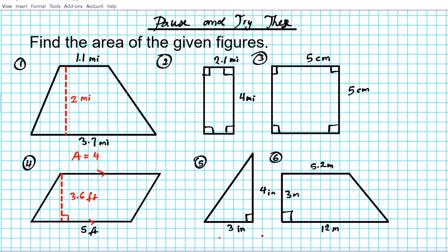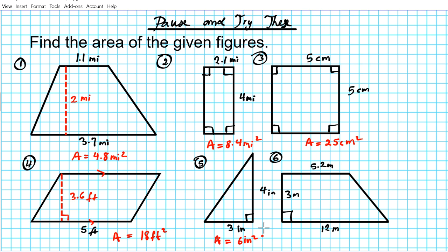Number one: the area is 4.8 miles squared. Number two: the answer is 8.4 miles squared. Number three: the area is 25 centimeters squared. Number four: the area of the parallelogram is 18 feet squared. Number five: the area of the right triangle is 6 inches squared — note that if you have a right triangle and one leg is the base, the other leg is your perpendicular height. Number six: the area is 25.8 meters squared.